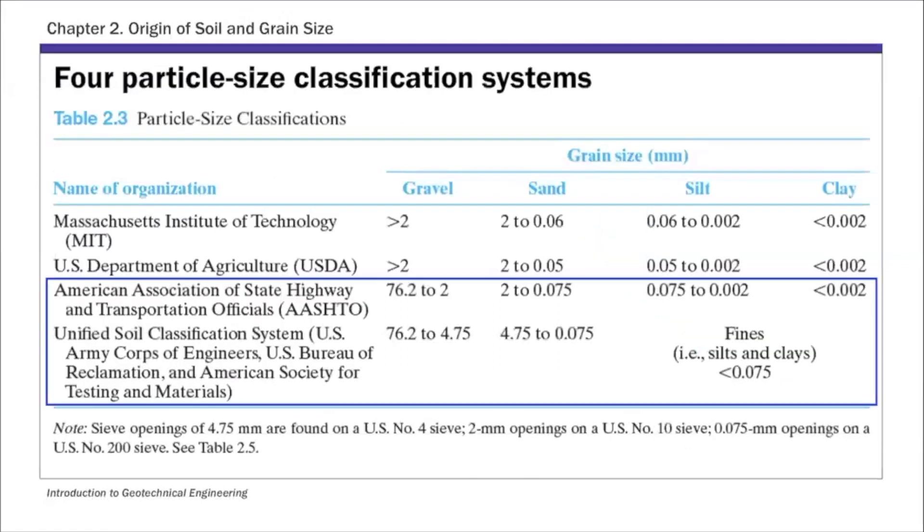Just as a quick review, last lecture we talked about two types of particle size classification systems. The first one is the AASHTO system and the second one is the unified soil classification system, which as I mentioned is required for this course. The USCS system, if you look at the classification, we have gravel 76.2 to 4.75 millimeter and sand 4.75 to 0.075 and then anything smaller than 0.075 is classified as fines, which includes silts and clays.